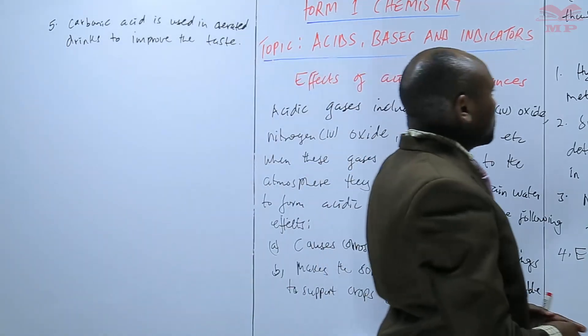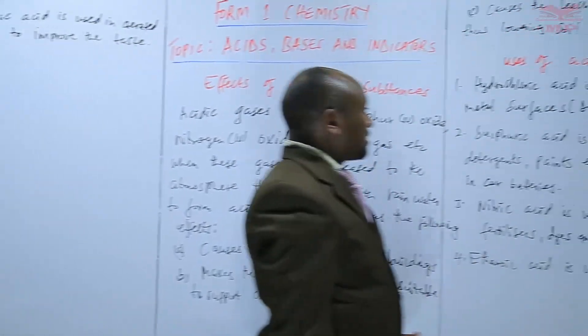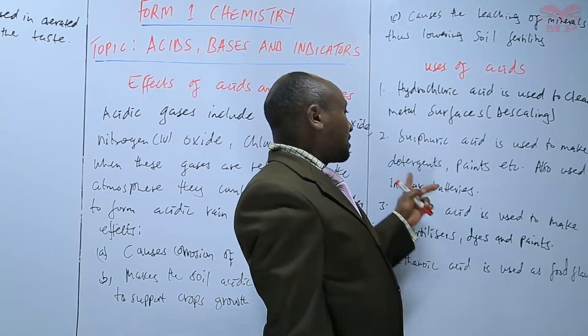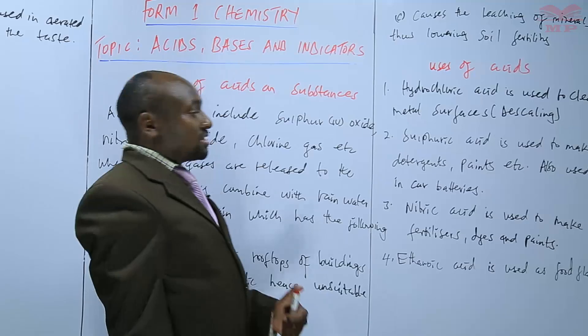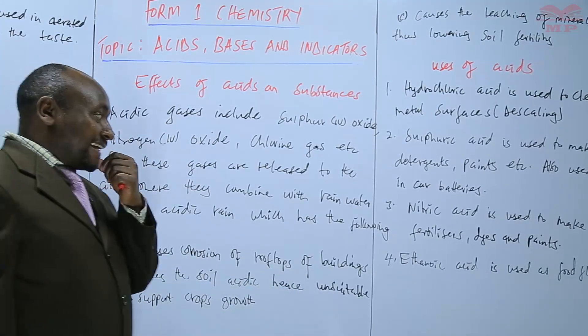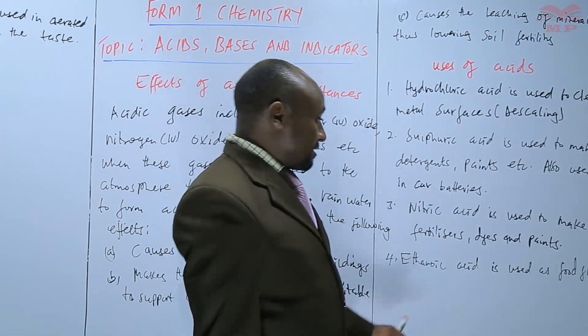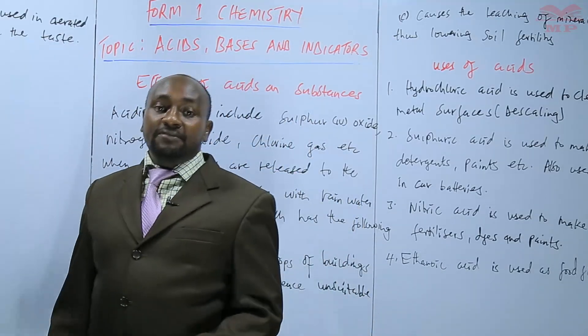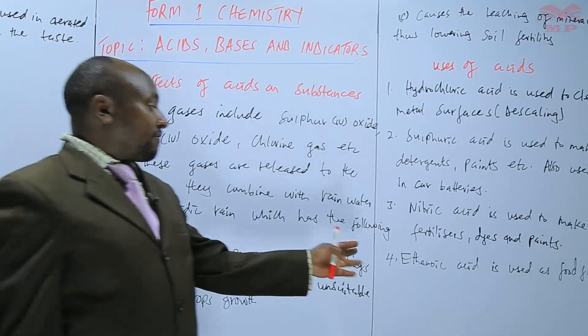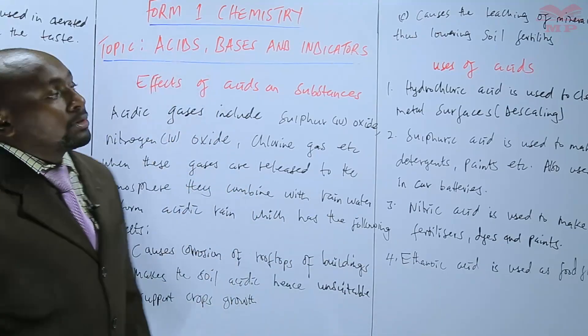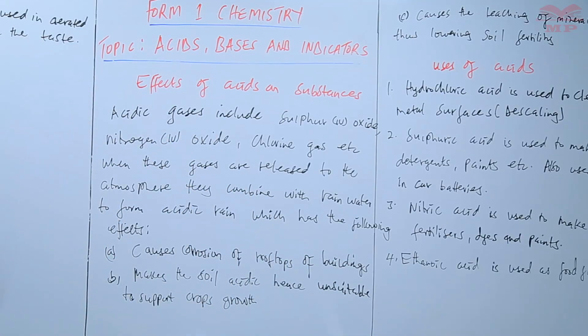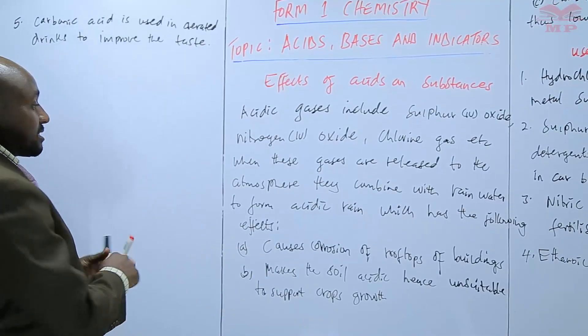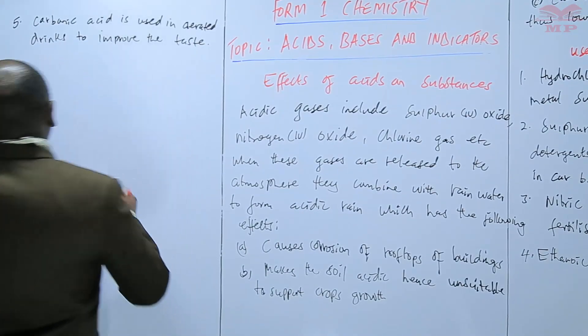Different acids have different uses. Hydrochloric acid, cleaning metal surfaces, descaling. Sulfuric acid, car batteries, making detergents and paints. Nitric acid, making fertilizers, dyes and paints. Ethanoic acid, food flavors, commonly found in vinegar. Carbonic acid used in aerated drinks to enhance or to improve the taste.